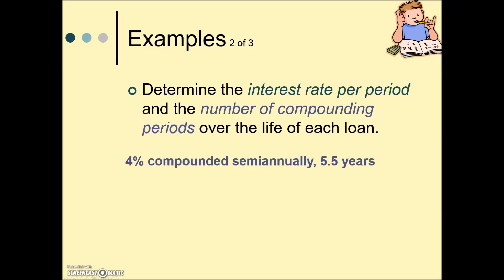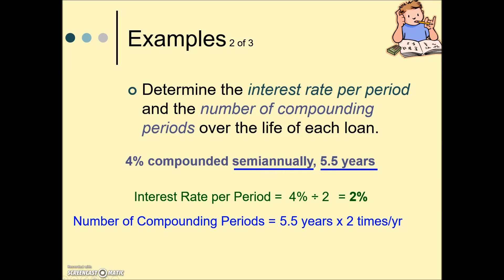In this next example they're asking for the same information, but the interest rate is 4% compounded semi-annually for 5.5 years. The interest rate per period: we take our interest rate and divide it by the number associated with semi-annually. So if we take 4% and divide it by 2, each compounding period would be earning 2%. How many compounding periods? Because it is semi-annually there would be two per year times the number of years. So we multiply 5.5 times 2 to give us 11 compounding periods.